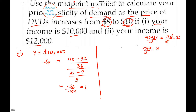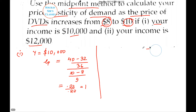Next is the income bracket of $12,000. So the second case is twelve thousand dollars. Again we apply the price elasticity formula.